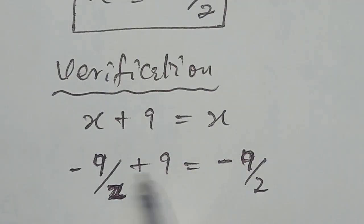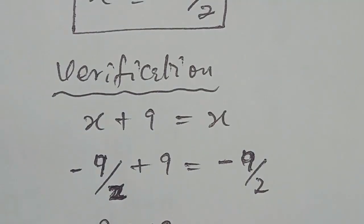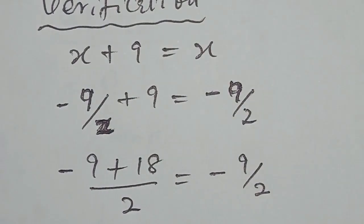So here, if we simplify the left-hand side, we arrive at minus 9 plus 18 over 2 equal to minus 9 over 2.